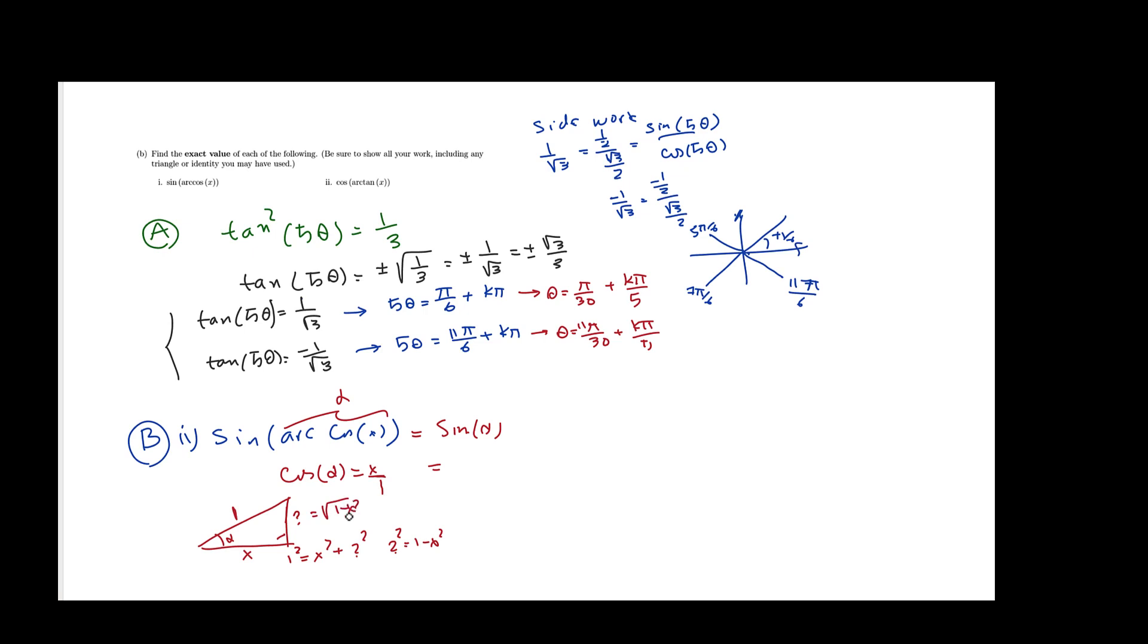Now, sine of this angle alpha is the question mark, which is square root of 1 minus x squared, the opposite divided by the hypotenuse. And that hypotenuse is 1, so I'm not writing it down. Part 2 of B, this was 1.